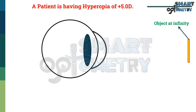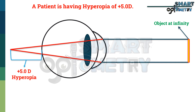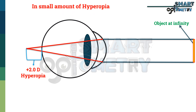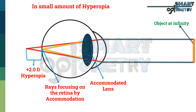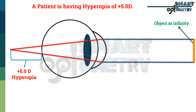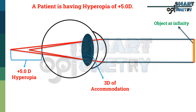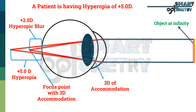Let's take an example. A patient has hyperopia of +5 diopters. Without correction, rays coming from infinity will focus behind the retina. In small amounts of hyperopia, the eye accommodates and brings the rays back onto the retina so the patient sees clearly. But in moderate to high hyperopia, the amplitude of accommodation is not enough. Suppose the patient can induce 3 diopters of accommodation — this brings the rays closer to the retina, but the rays still focus behind it, so the patient sees blur at distance equal to +2 diopters.